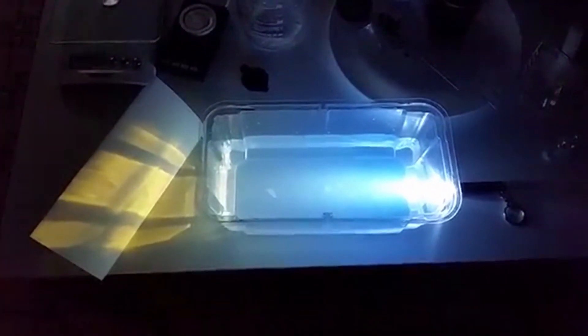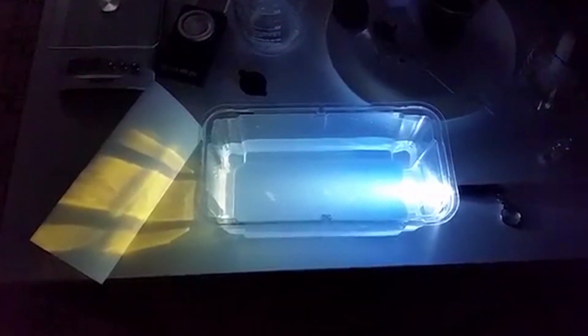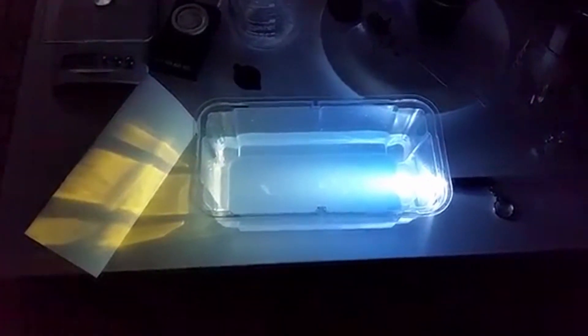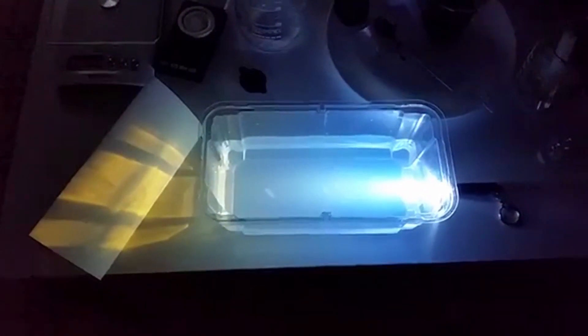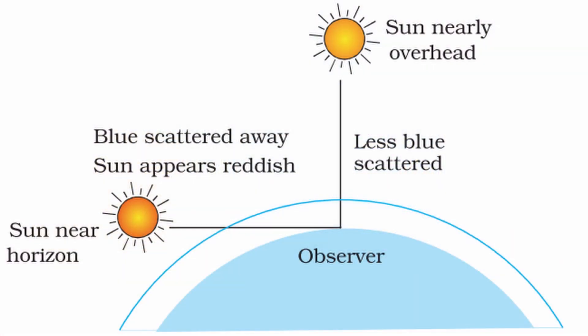Ek din mein sun aur earth ki position change nahi ho rahi hai. Keval earth rotate kar rahi hai. To sun aur earth ke beech ka distance change nahi ho raha hai. To kya change ho raha hai? Earth jab rotate kar rahi hai,